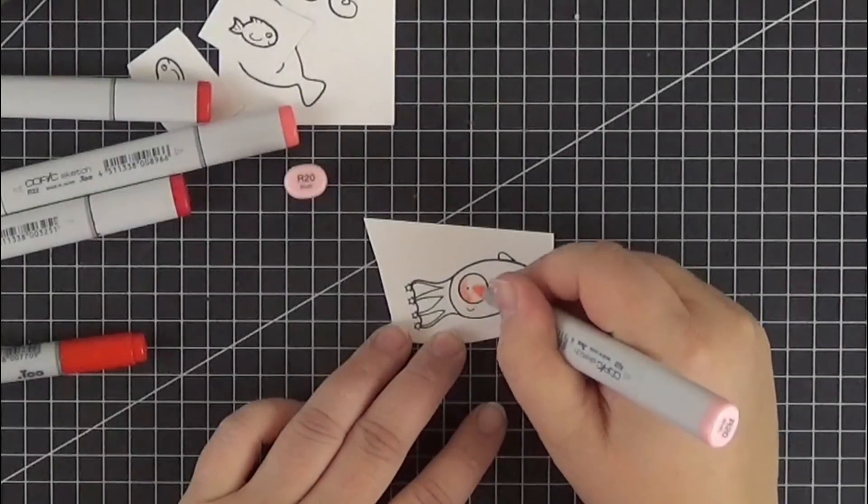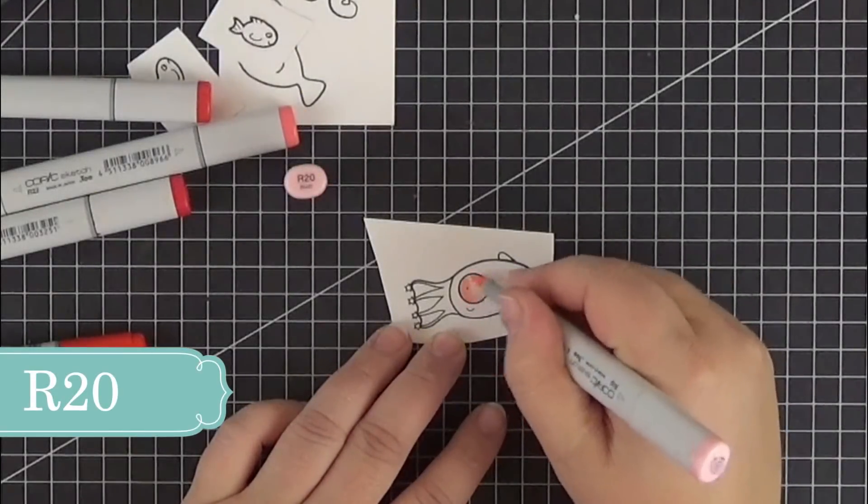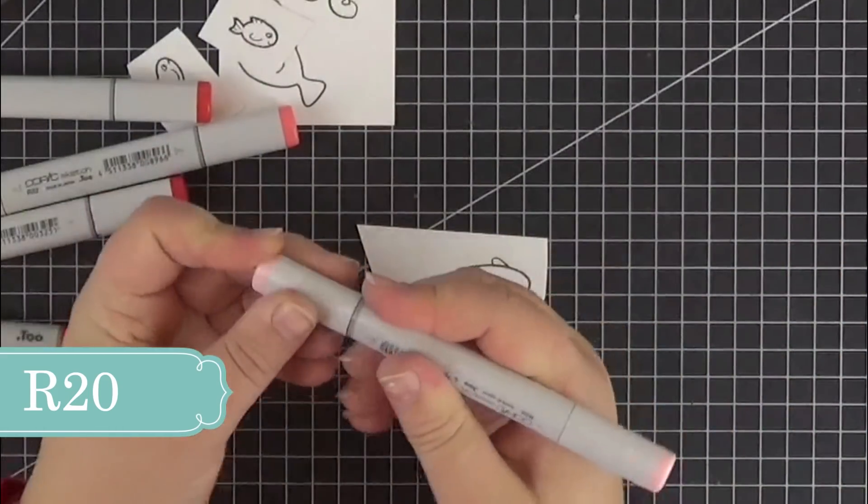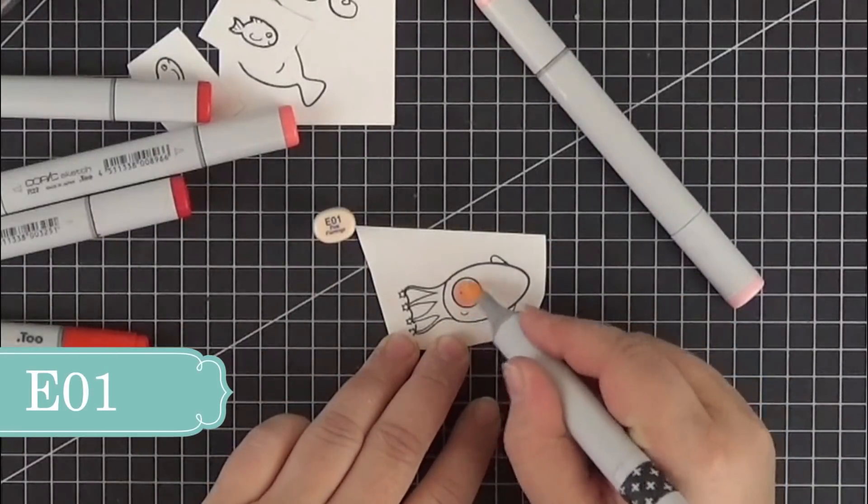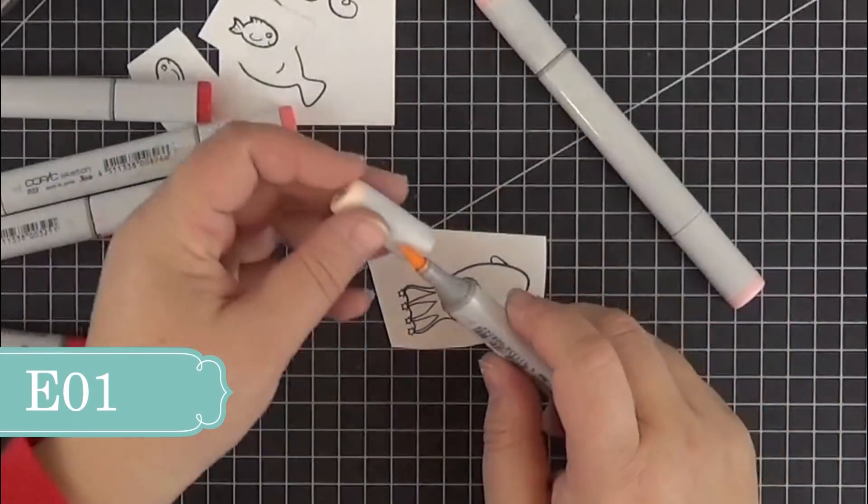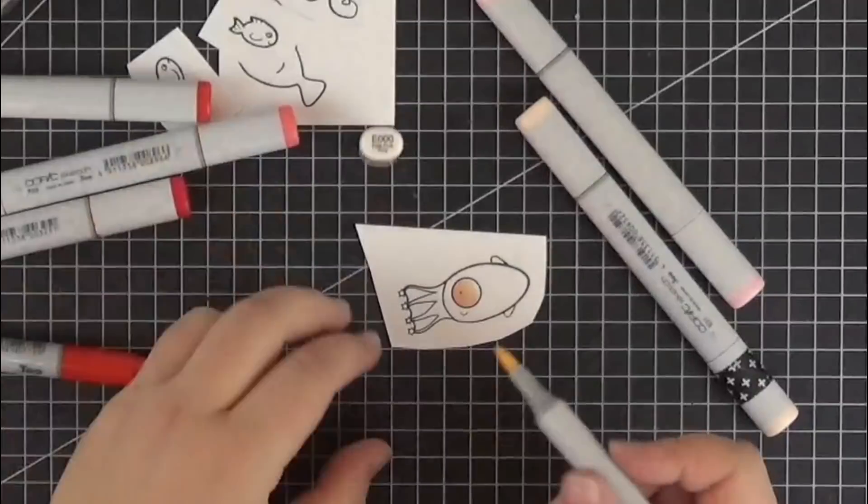Now I'm going to show you a little bit of my coloring. I'm no expert and I usually start with the darkest color. For the eye, that's the R20. Then I used E01 and finally E000.